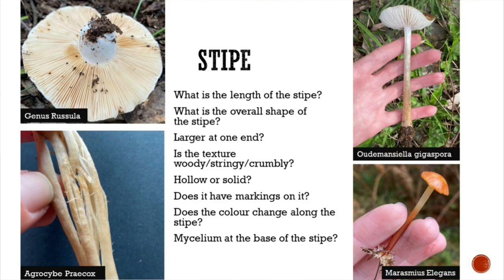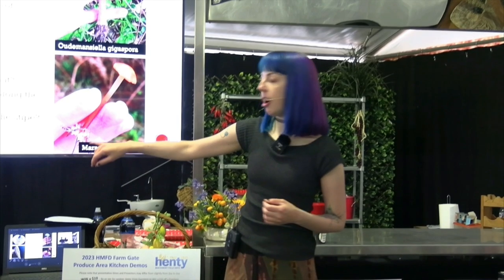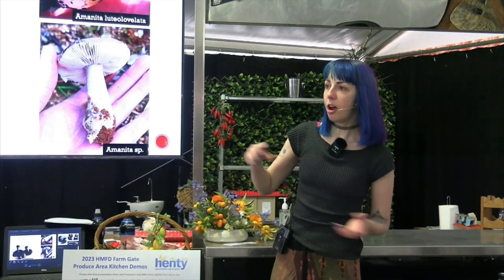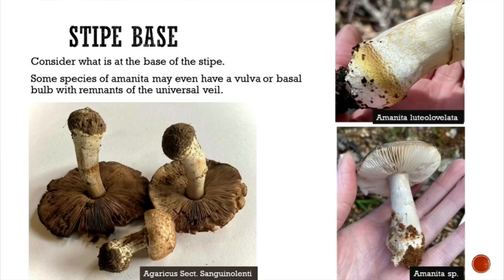Stipe is another word for the stem. Consider the length, texture, whether it is larger at one end, hollow or solid, and whether it has markings. Feel the stipe as well. Some are short and stubby, some have a fibrous texture, and some come up with mycelium. The stipe base is also important — does it have an enlargement, a club shape, or markings?